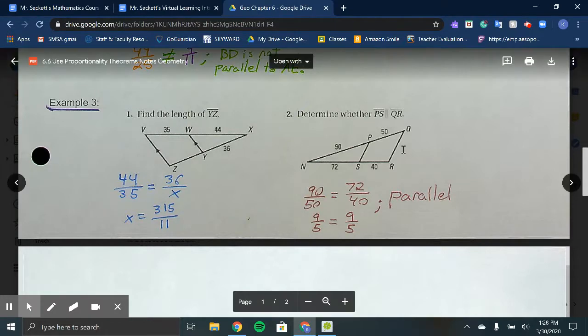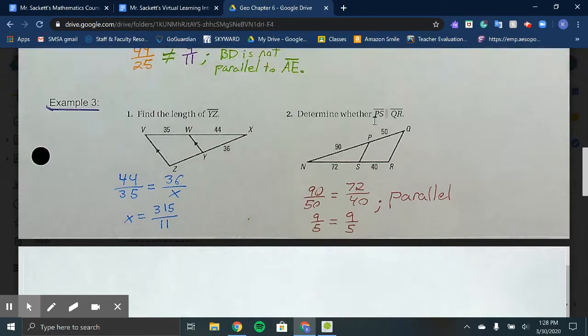In Example 3 part 2, they ask us to determine if side PS is parallel to side QR. We want to set up the proportions and see if the two sides are proportional. We'd have 90 over 50 along the top, and 72 over 40 across the bottom. Both situations simplify to 9 fifths, so those segments are parallel.